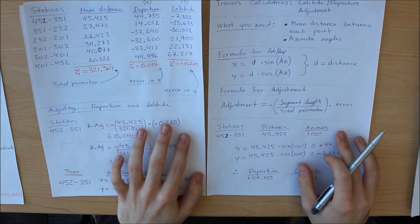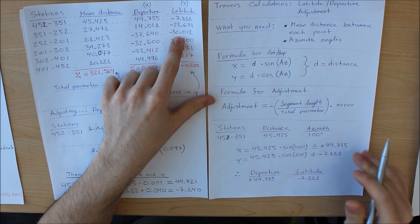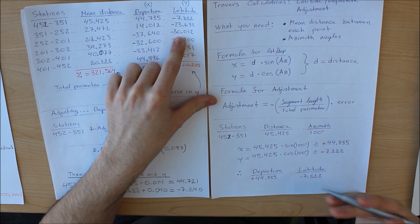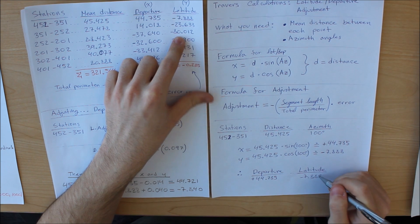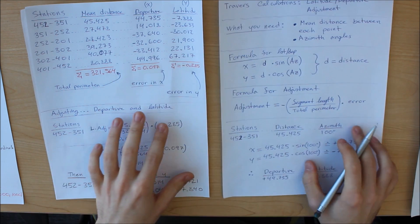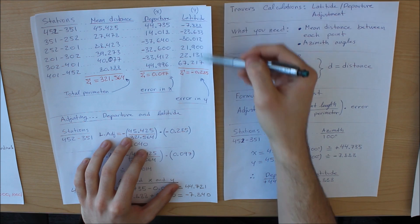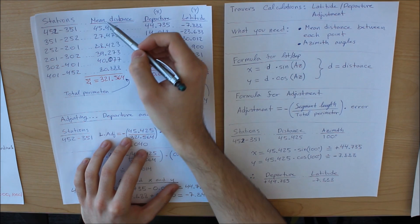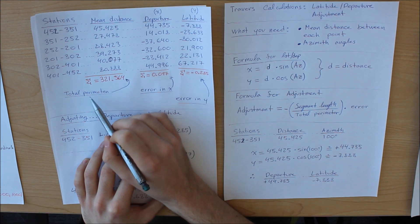Once you do it for each one, you will be given these values right here as you can see. Now I didn't bother to do it for each one of course, just to save time, but it's the exact same thing for each one. Now you get all these values and then you will sum it up. So you will add these values together, even the distance. If you add all your mean distance together, that is your total perimeter, as you can see.